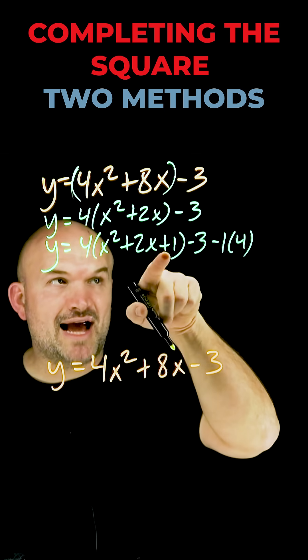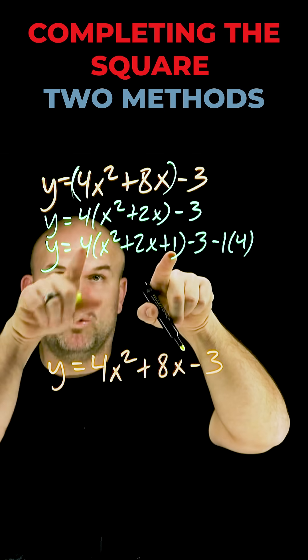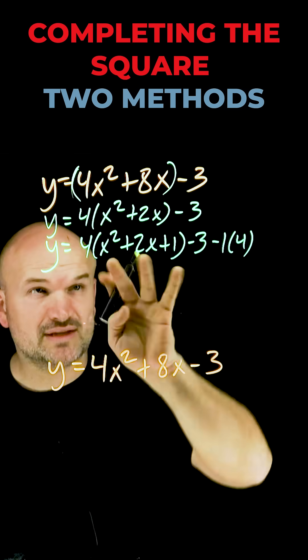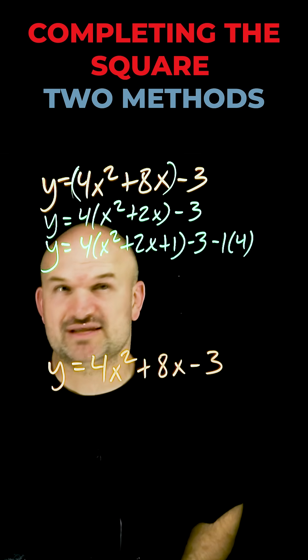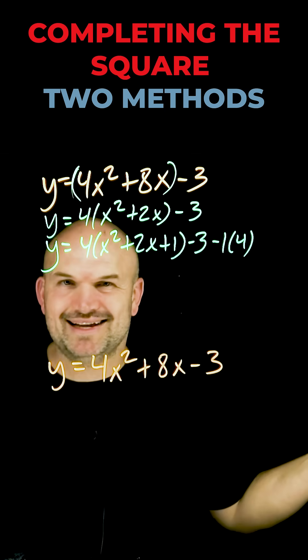So again remember, add and subtract on the same side. This 1 is being multiplied by 4, so this 1 needs to be multiplied by 4. Now what I can simply do is go ahead and factor this down to a binomial squared and I can identify my vertex.